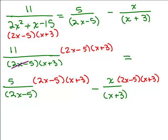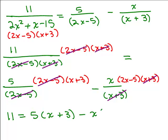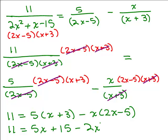This 2x minus 5 cancels, the x plus 3 cancels here, the 2x minus 5 cancels here, the x plus 3 cancels here, so what do I end up with? I've got the 11 equals, then I have 5 times x plus 3 minus x times 2x minus 5. So I have 11 equals 5x plus 15 minus 2x squared plus 5x, and that's exactly what we got before when we were eliminating the fractions by just making all the denominators the same.